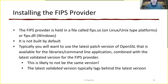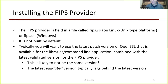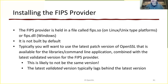So how do we install the FIPS provider? The provider itself is a loadable module — it's a file called fips.so on Linux or Unix type platforms, or fips.dll on Windows. It's not built by default; you have to explicitly ask for it when building OpenSSL. In the normal case, what you're going to want to do is run the most up-to-date, latest patch version of OpenSSL that's available — the latest version of libcrypto, libSSL, and the apps — but with a validated version of the FIPS provider, which is likely to be an older version.